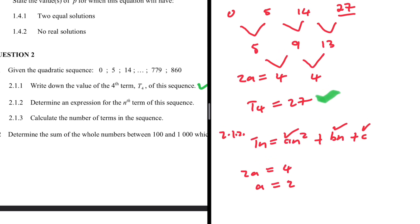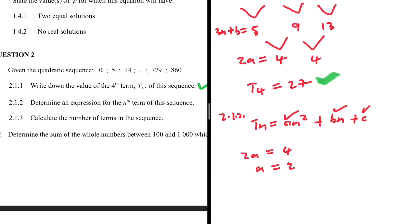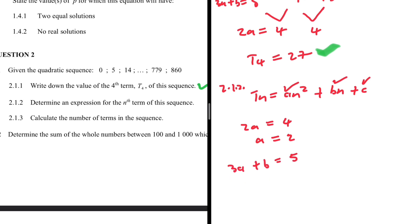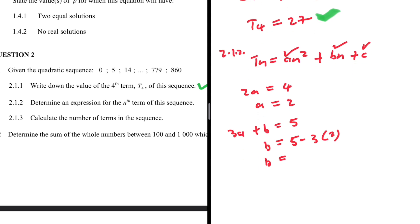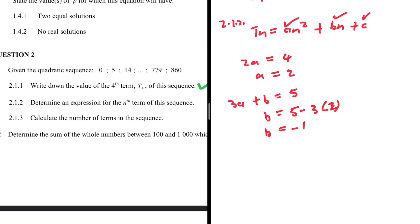Then 3a + b equals the first term of the first differences, so 3a + b = 5. Therefore b = 5 minus 3a. Since a = 2, we get b = 5 minus 6, which gives us b = -1.